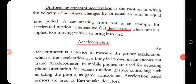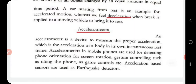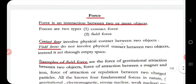A body is said to be in uniform or constant acceleration when the velocity of the object changes by equal amounts in equal time periods. For example, a car starting from rest is an accelerated motion; applying a sudden brake is deceleration. Accelerometers are devices used to measure the proper acceleration of an object — for example, mobile phones use accelerometers to detect the orientation of the phone screen. Accelerometer-based sensors are also used in earthquake detectors.